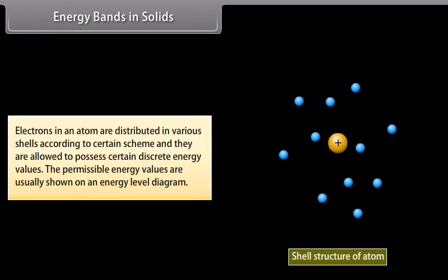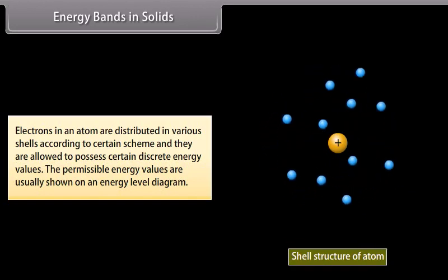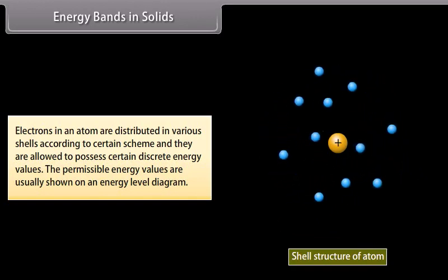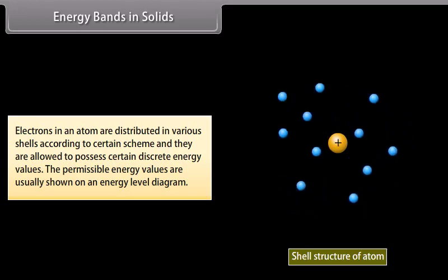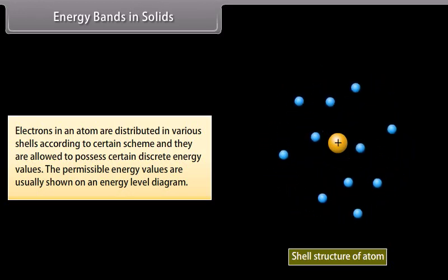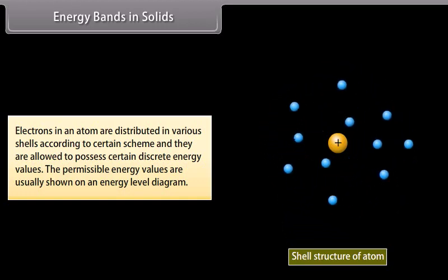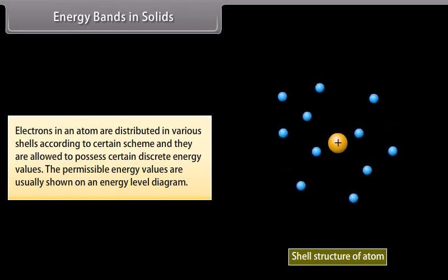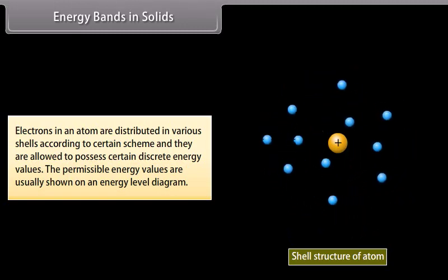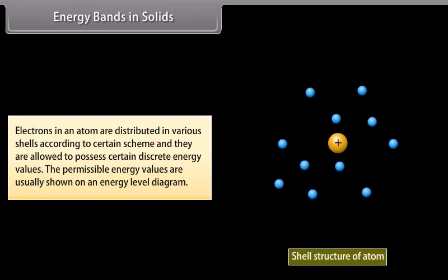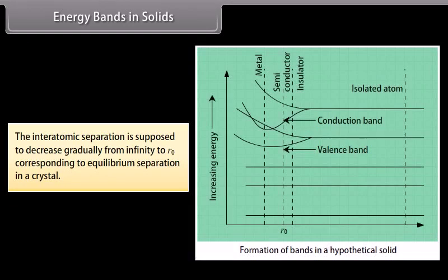Energy bands in solids. Electrons in an atom are distributed in various shells according to a certain scheme, and they are allowed to possess certain discrete energy values. The permissible energy values are usually shown on an energy level diagram. We consider the formation of bands for the energy level normally occupied by valence electrons and the next level above it. The interatomic separation is supposed to decrease gradually from infinity to R, corresponding to equilibrium separation in a crystal.